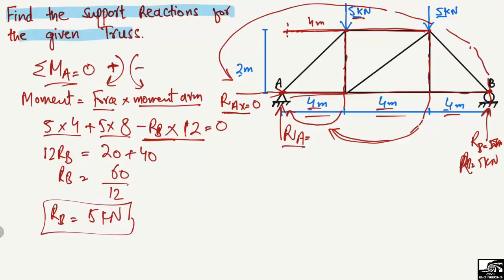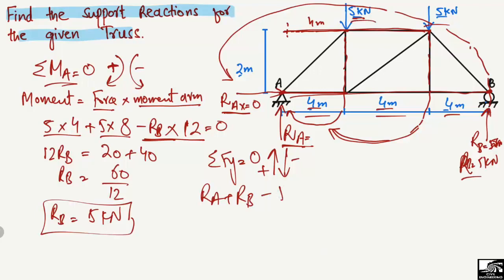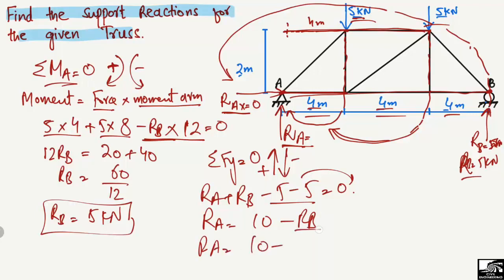To find RA, we use the summation of vertical forces equal to zero, with upward forces positive and downward forces negative. So RA + RB − 5 − 5 = 0, which gives RA = 10 − RB = 10 − 5 = 5 kN. The support reaction at A is 5 kN.